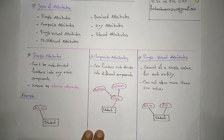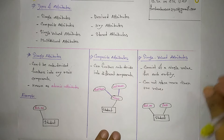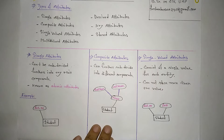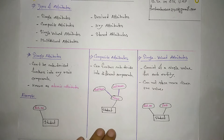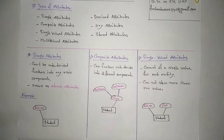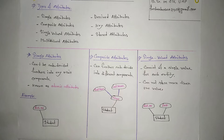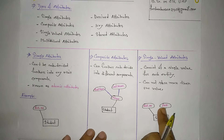Now, single-valued attributes. A single-valued attribute consists of a single value for each entity. It cannot store more than one value. For example, a student entity — if a student has multiple phone numbers, the phone number attribute would not be a single-valued attribute.